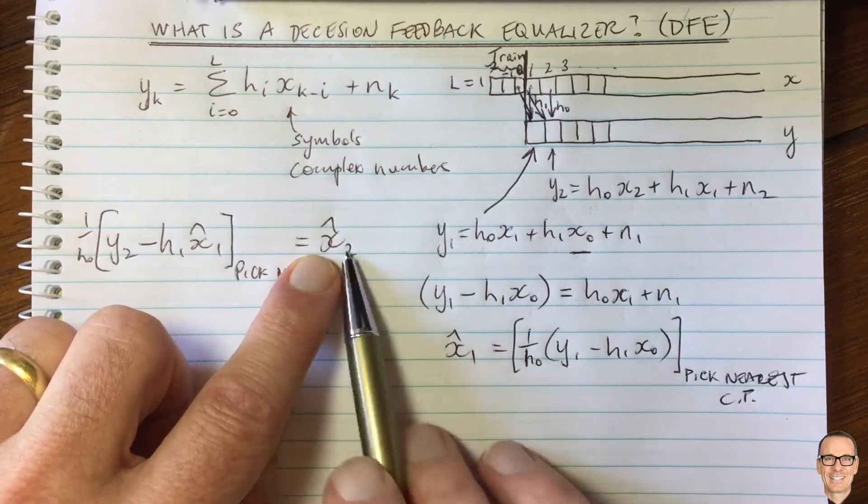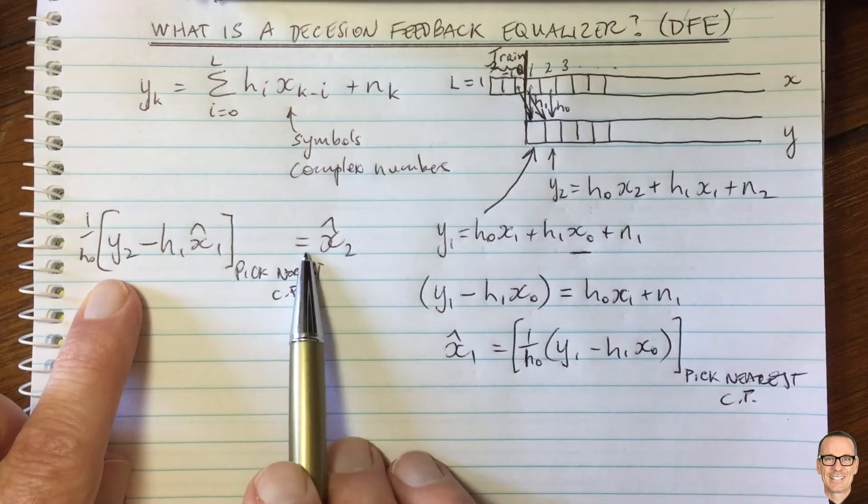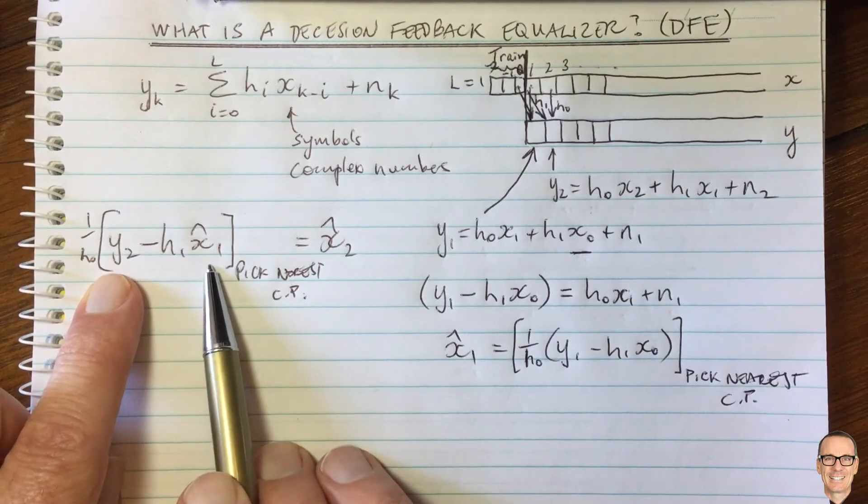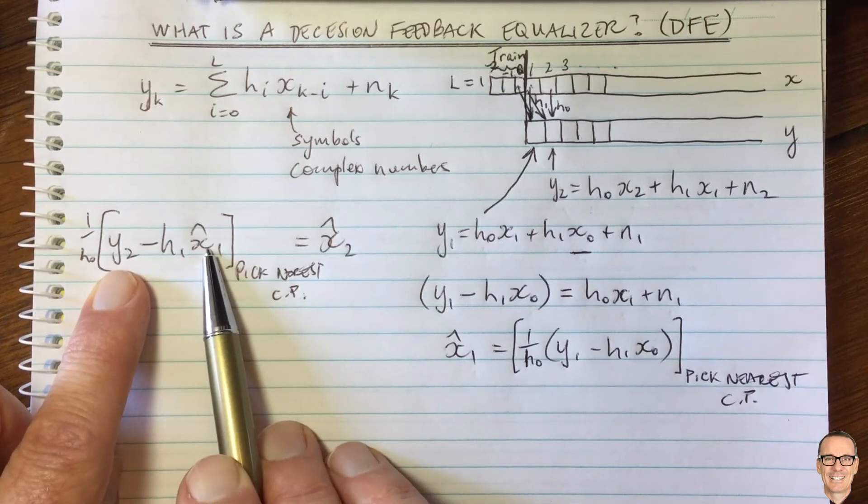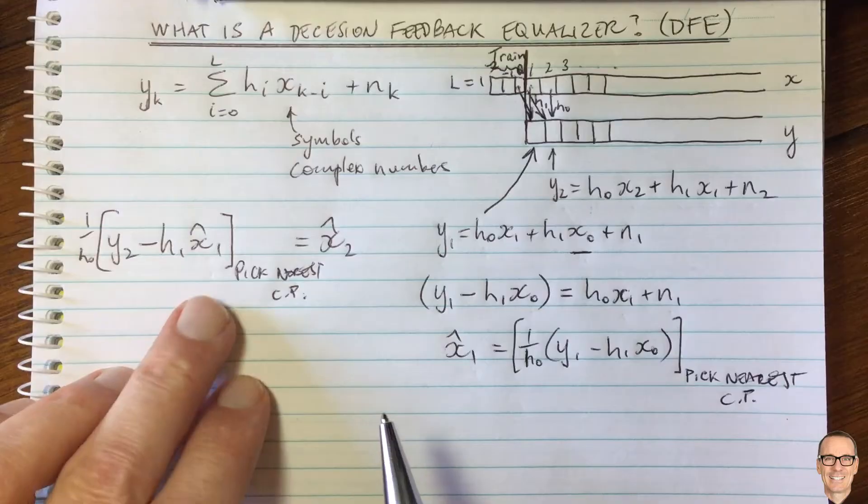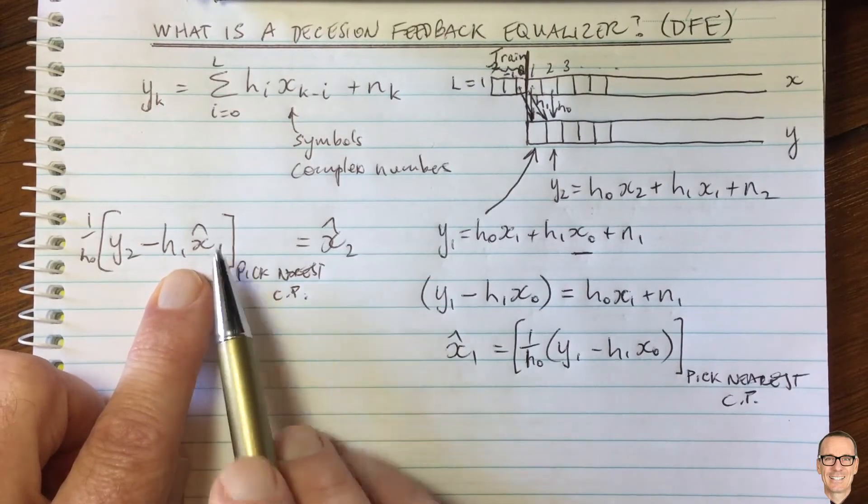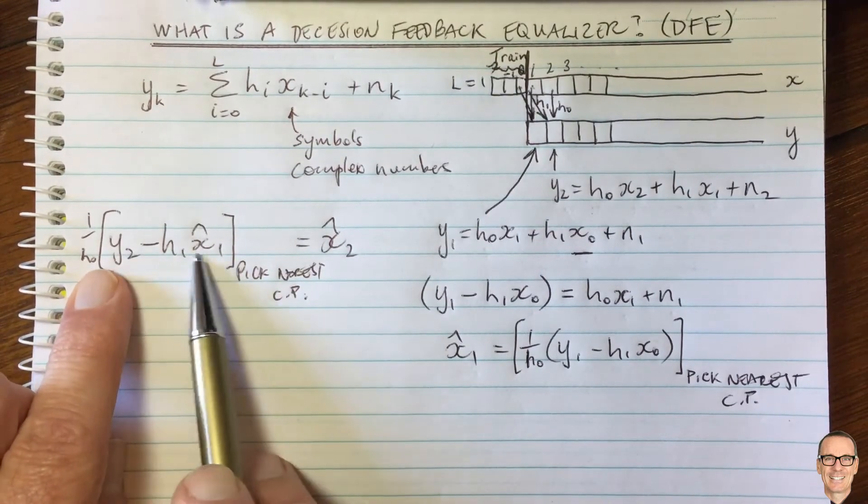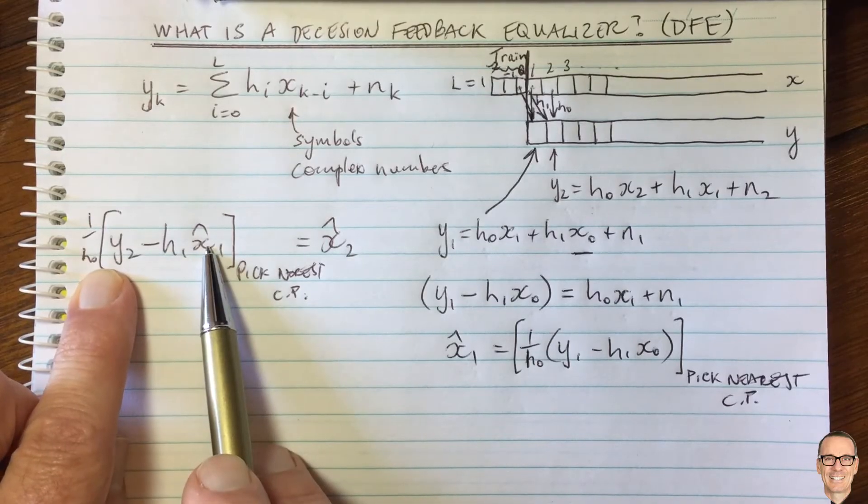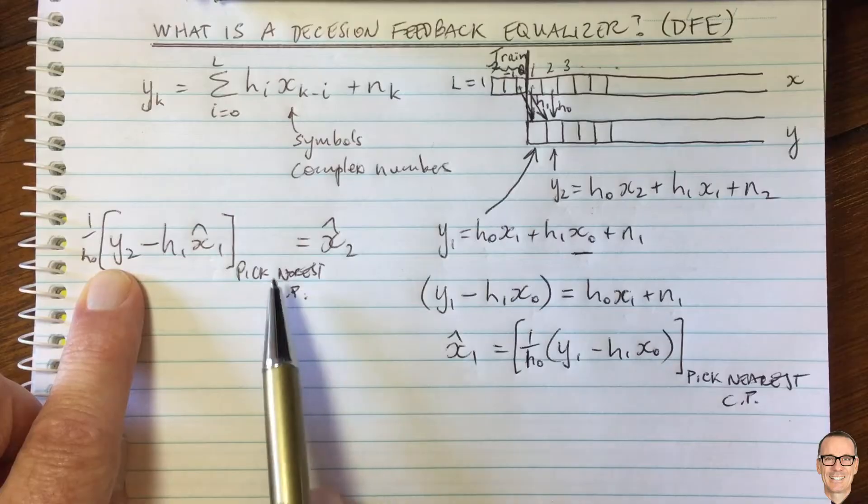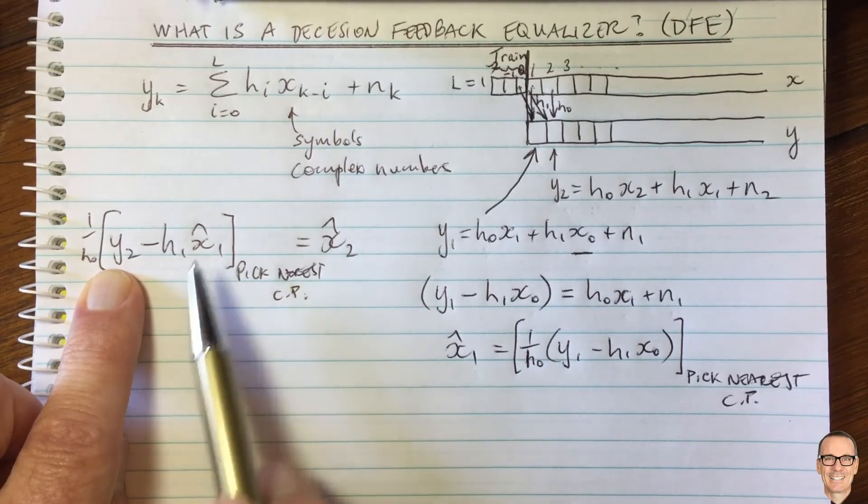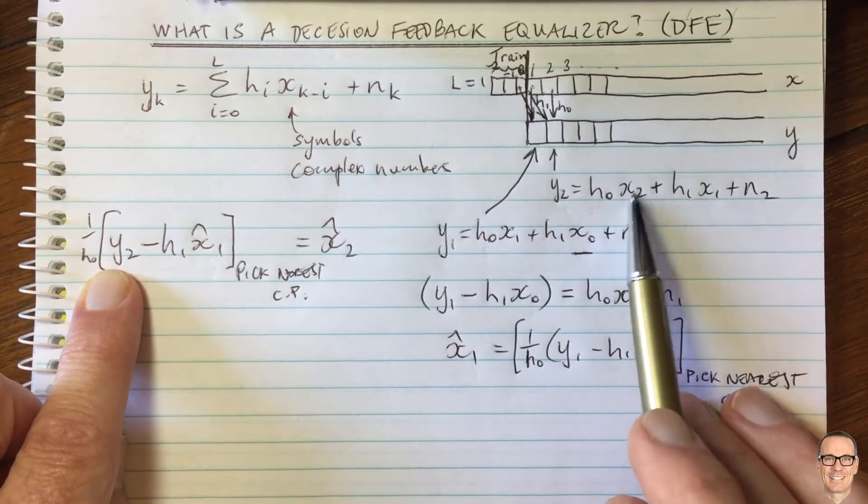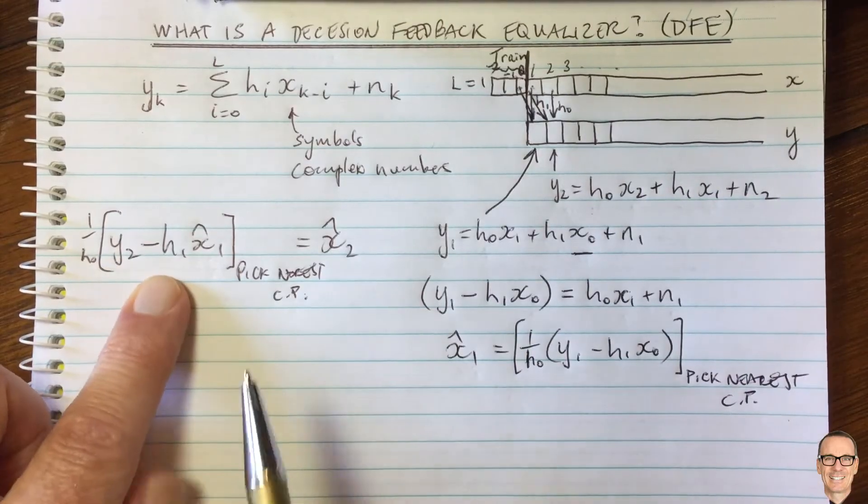And as long as you don't make a mistake, then it will be a perfect thing to do. And you will be always making the correct correction, the right correction here to the measurement to remove the inter-symbol interference. So that's what a decision feedback equalizer is. Now, if you don't make the right decision, then you'll get something called error propagation. Because obviously, if we got x1 wrong here, we would be removing, we'd be removing, or we'd be adding it instead of removing it if it was binary. And then we would be making the wrong choice when we pick the nearest constellation point. And that would continue to propagate on, of course, because we're continuing to use the current estimate to adjust the next measurement. Okay, so that's called error propagation.